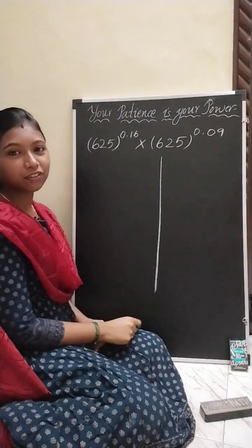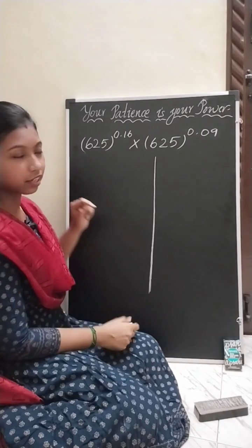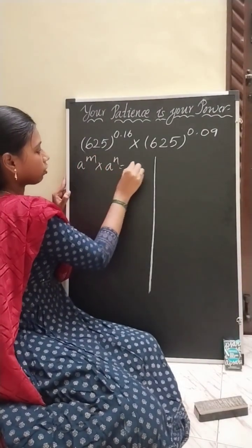Hello, so here we have 625 to the power 0.16 times 625 to the power 0.09. This is a very easy sum. This can be taken as a^m times a^n, which is equal to a^(m+n).